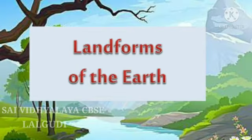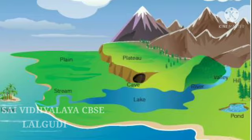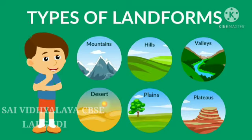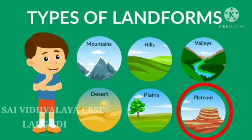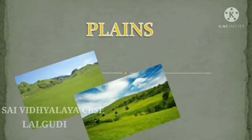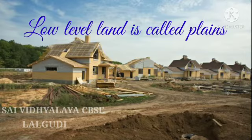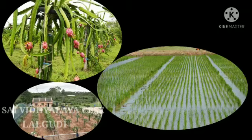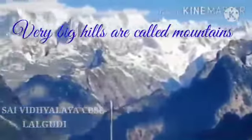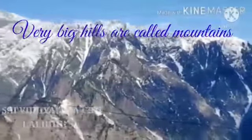Land has many different forms. Each type of landform is defined by its shape, type, location, and what it's made of. Different major landforms are plains, mountains, hills, deserts, plateaus, forests, and valleys. Plains are low level, flat land. We live on land — our houses are built on land and we cultivate fruits, vegetables, and crops on it.